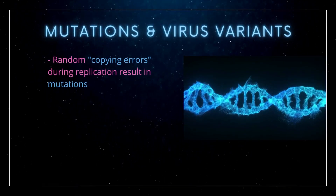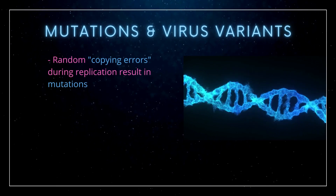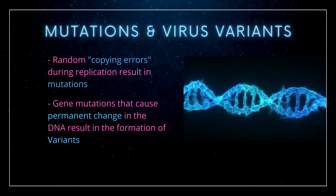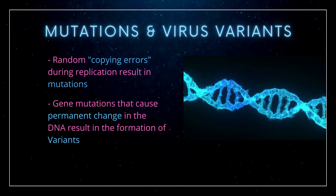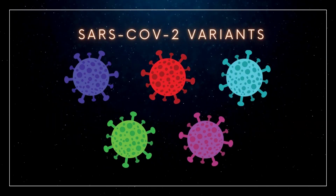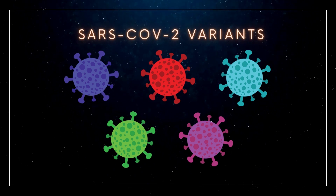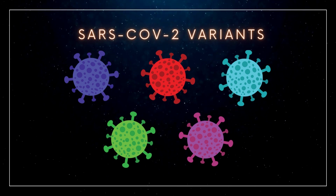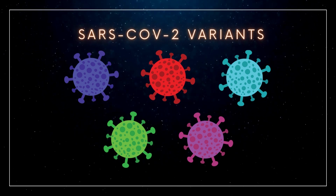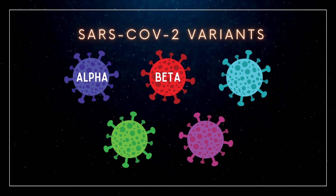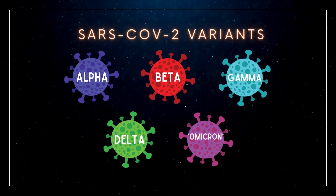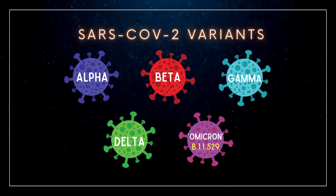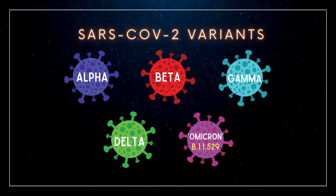To start off, what is Omicron? During virus replication, viral genes undergo random copying errors resulting in mutations. Gene mutations that cause permanent change in the DNA result in the formation of new virus variants. SARS-CoV-2 coronavirus is responsible for the spread of the COVID-19 pandemic. This virus has taken the form of several variants over the past two years: starting with Alpha, Beta, then Gamma and Delta, and now Omicron, also known as B.1.1.529. The Omicron variant has officially replaced the Delta variant as the dominant strain.